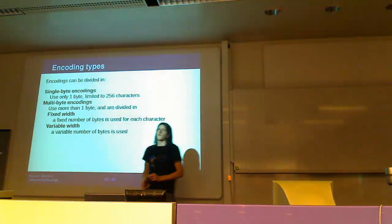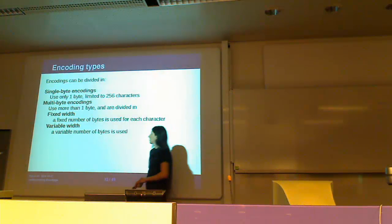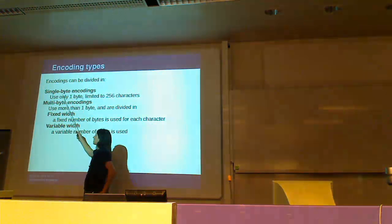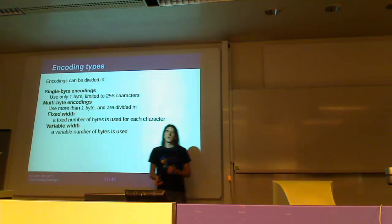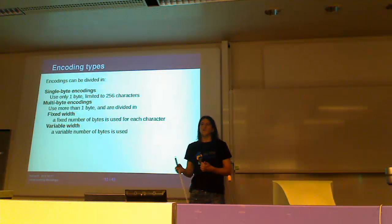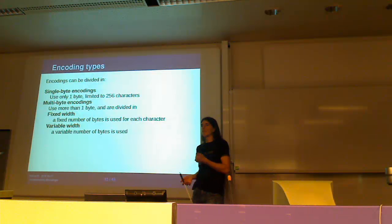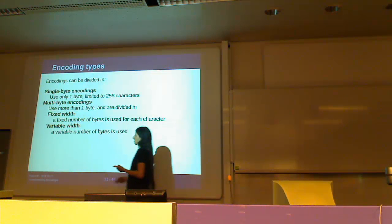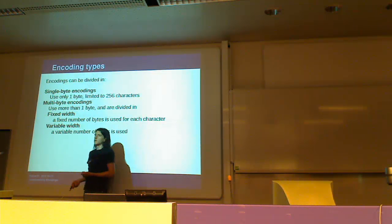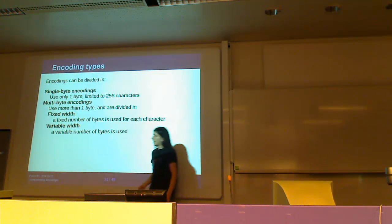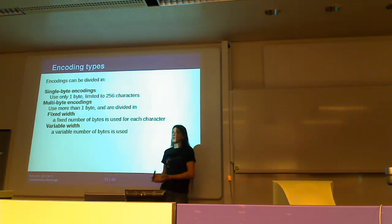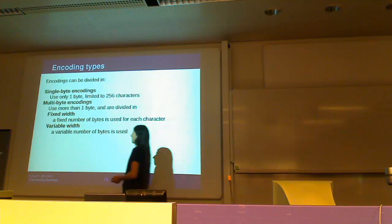There are different kinds of encoding. The simplest type is called single-byte encodings — they only use one byte and can represent all characters in their character set using only one byte. For character sets like Unicode, they can't fit in one byte, so we have multi-byte encodings. Multi-byte encodings are further divided into fixed-width encodings and variable-width encodings.